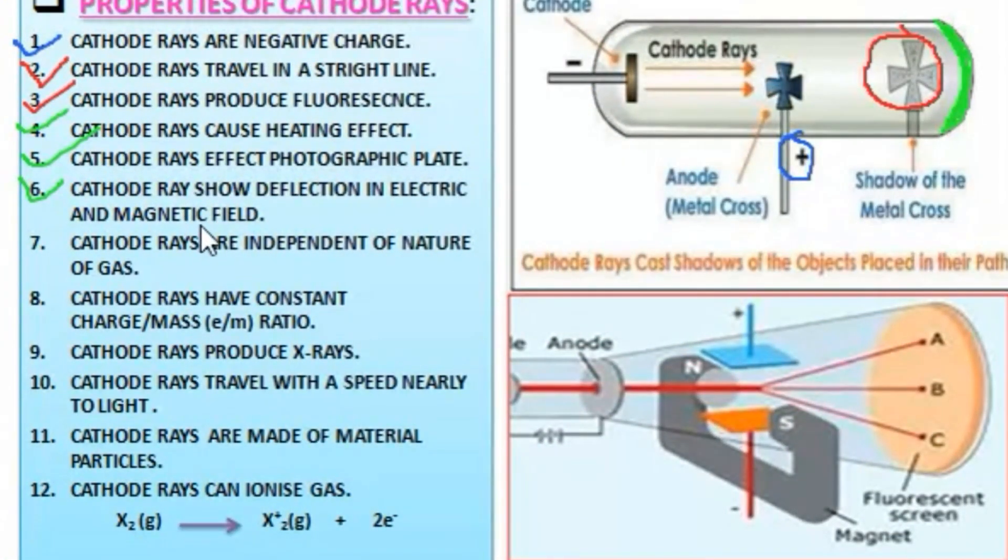Number six: cathode rays show deflection in electric and magnetic fields. Here I've given a diagram. This diagram easily helps to understand that the cathode ray is negatively charged. The cathode ray deflects towards the positive terminal, and it also deflects by the magnetic field.